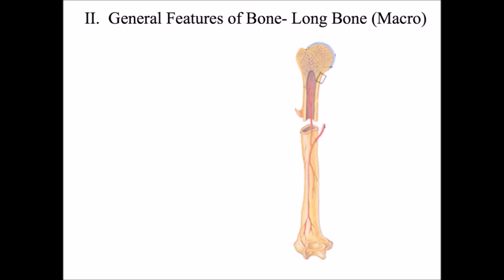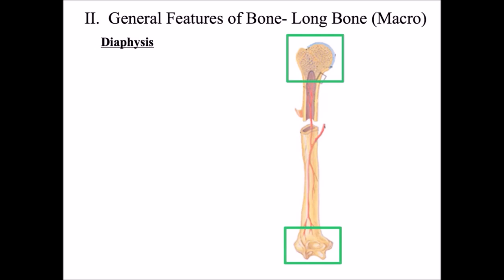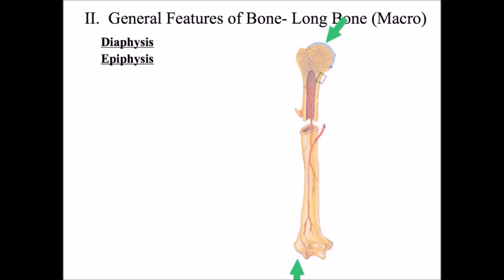Now we're going to look at some general features of a typical long bone — what we call macro structures, meaning large structures you can see without the aid of a microscope. The long middle area of a long bone is called the shaft or diaphysis. At the ends of a typical long bone are the knobby ends called the epiphysis. At the ends of the epiphysis you find articular cartilage — 'artic' means joint — so articular cartilage is cartilage found at the joints where two bones come together.